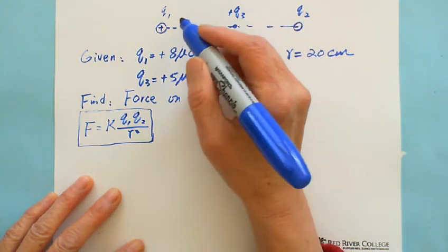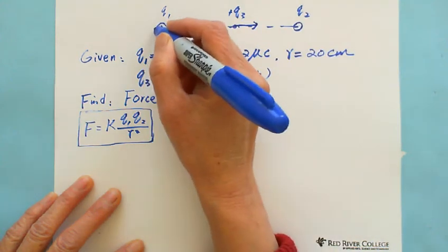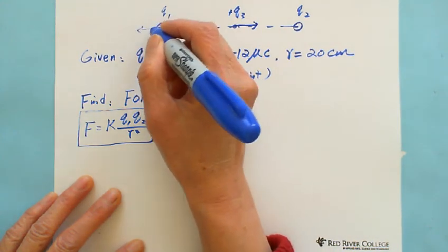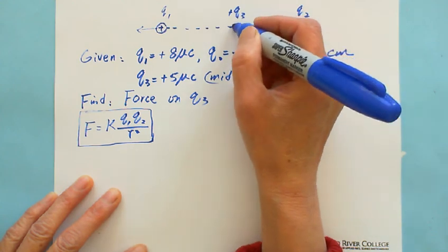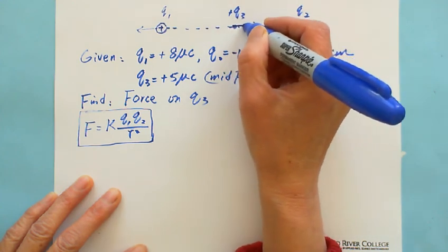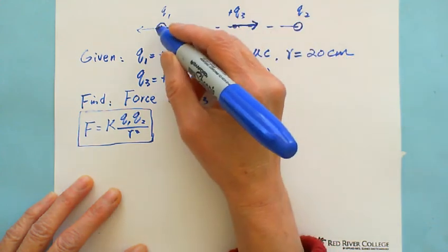This force from Q1 is repelling this way because they both repel each other. So we're talking about the force on Q3, we're interested in what is the force acting on Q3 from Q1. We label this one F31.